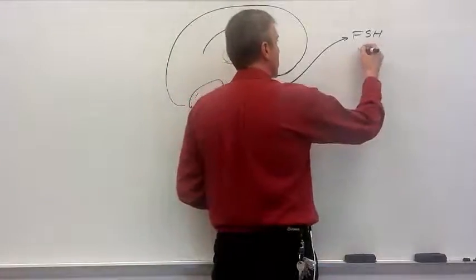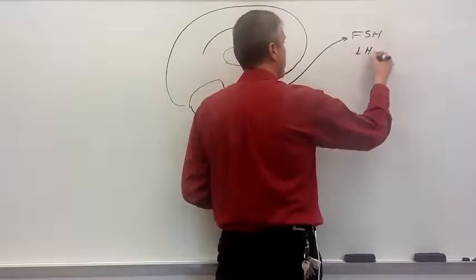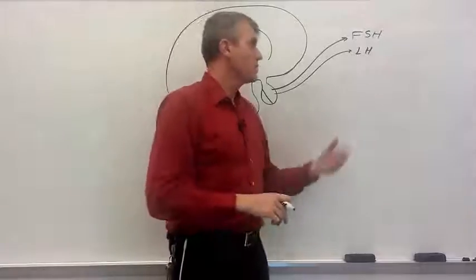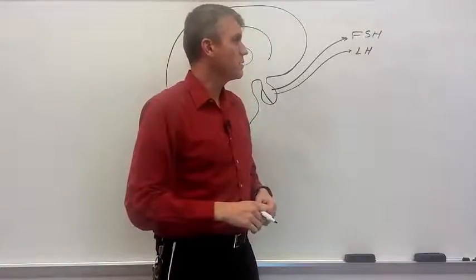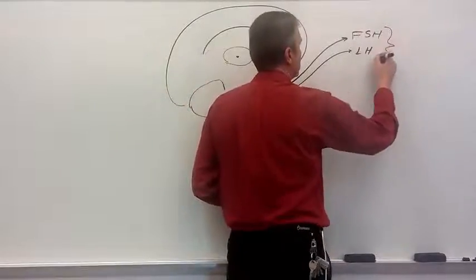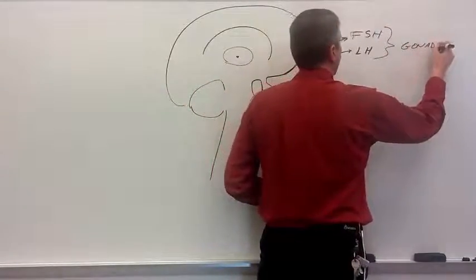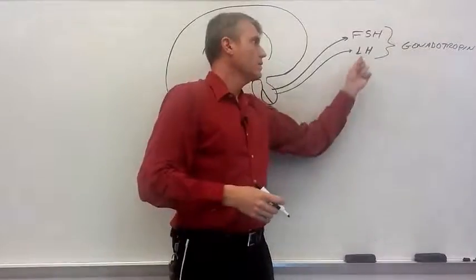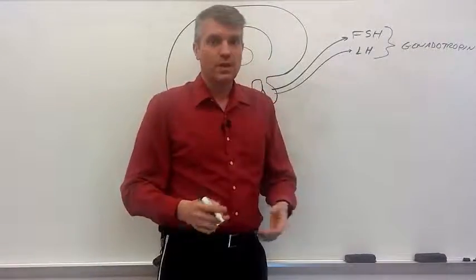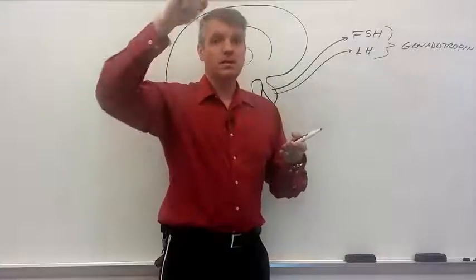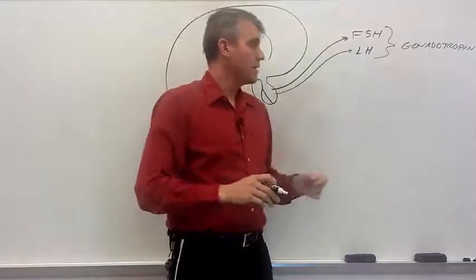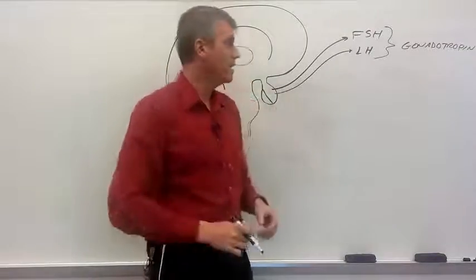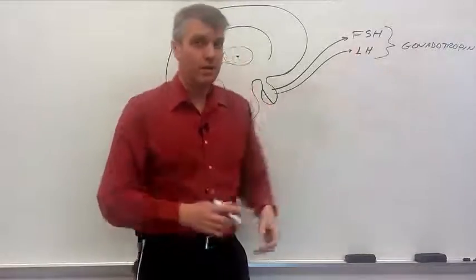The next one is Luteinizing Hormone, or LH. Luteinizing Hormone also has an influence on the gonads. So it's the other gonadotropin. Luteinizing Hormone is involved with ovulation. During the female cycle there is a spike in Luteinizing Hormone. And that spike is the signal to that mature follicle to literally pop and release the egg.